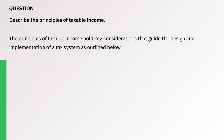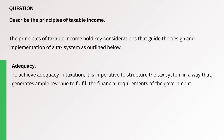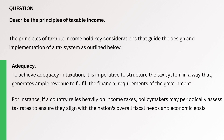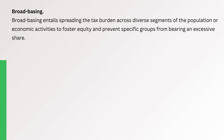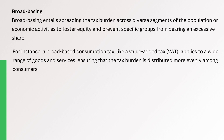Question. Describe the principles of taxable income. The principles of taxable income hold key considerations that guide the design and implementation of a tax system. 1. Adequacy: To achieve adequacy in taxation, it is imperative to structure the tax system in a way that generates ample revenue to fulfil the financial requirements of the government. 2. Broad-basing: Broad-basing entails spreading the tax burden across diverse segments of the population or economic activities to foster equity and prevent specific groups from bearing an excessive share. For instance, a broad-based consumption tax like VAT applies to a wide range of goods and services, ensuring the tax burden is distributed more evenly among consumers.